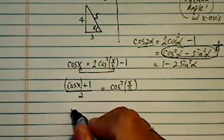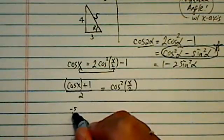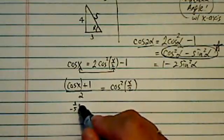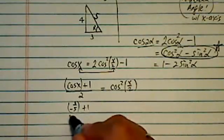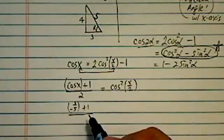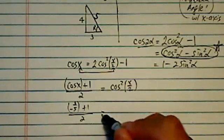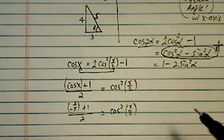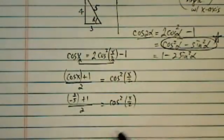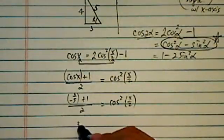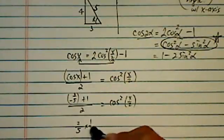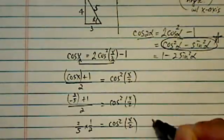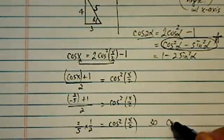I'm going to substitute in here. I have minus 3 over 5 plus 1, I'm going to divide it by 2. That's equal to cosine squared x over 2. So a couple more steps. And this is 2 over 5 times 1 over 2 is equal to cosine squared x over 2.